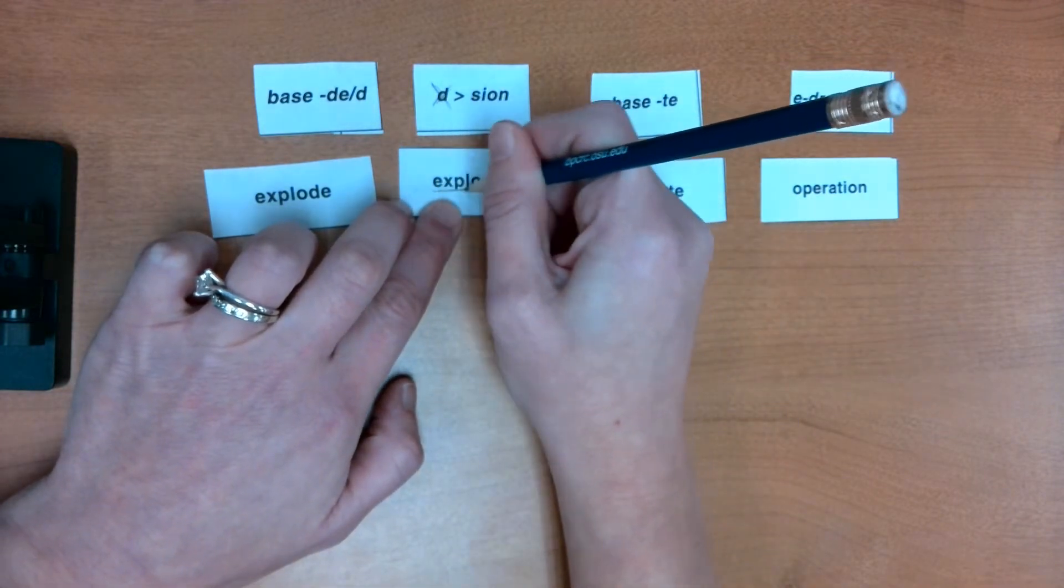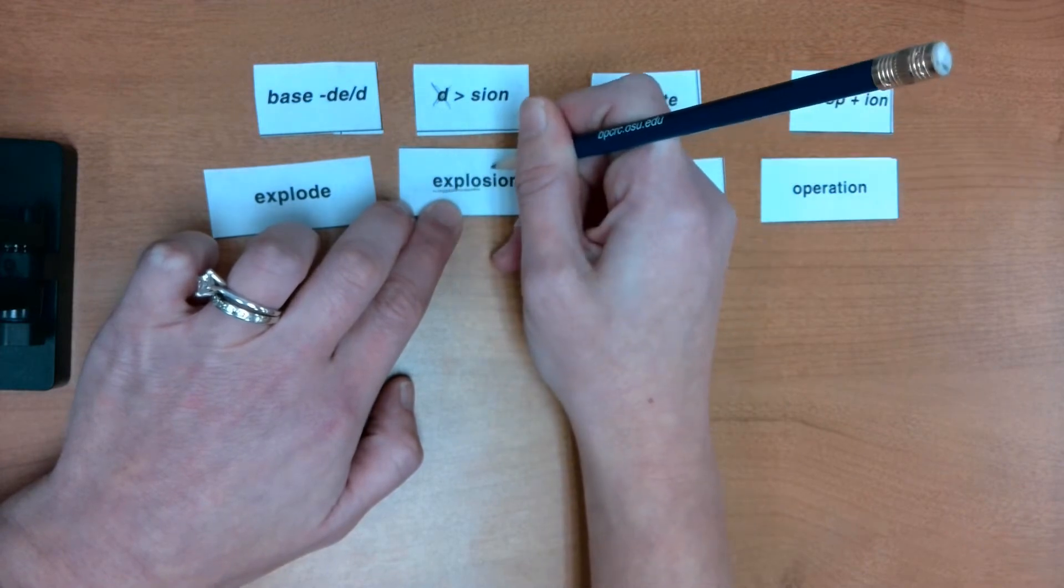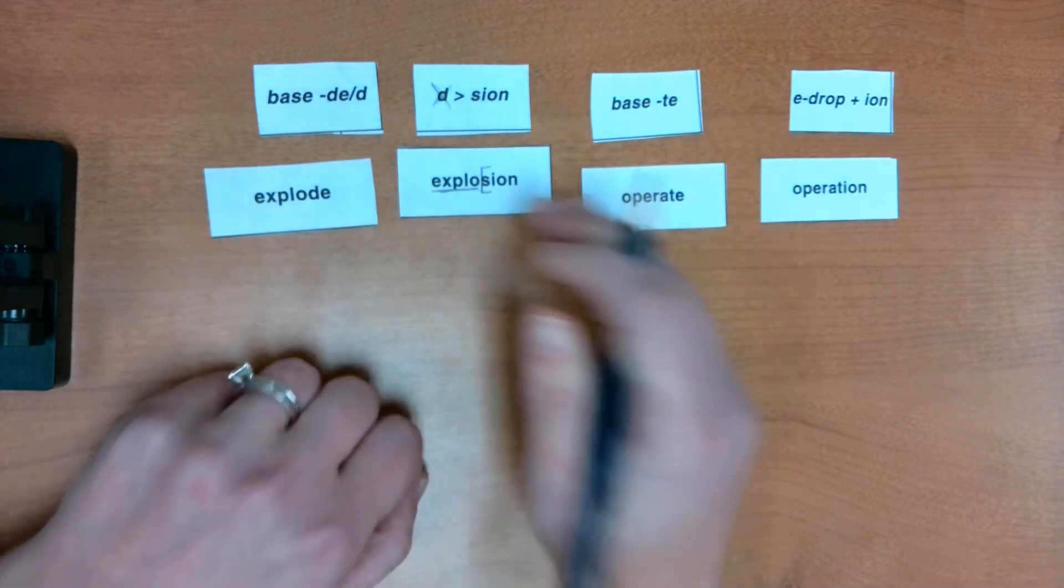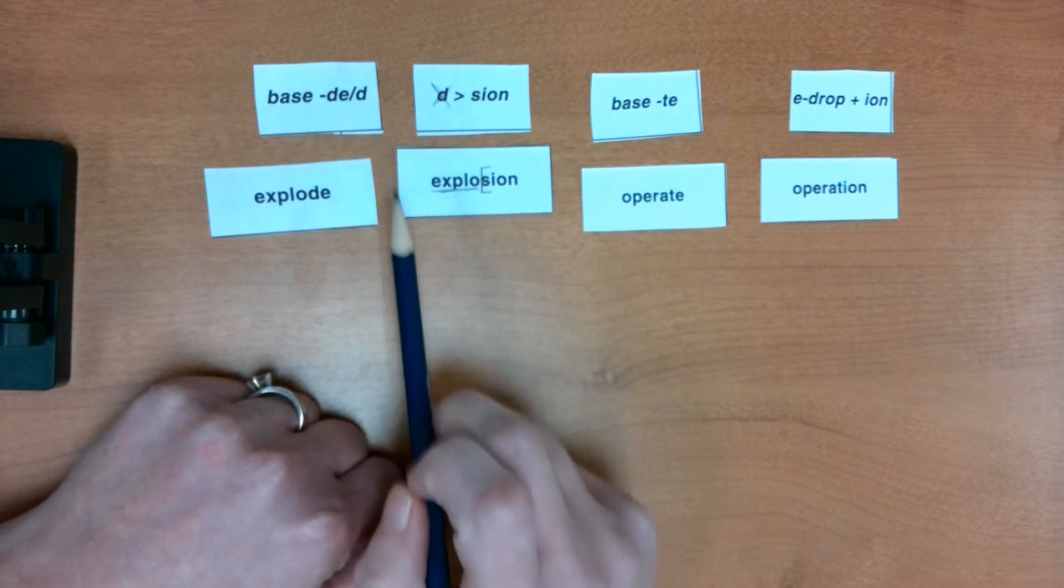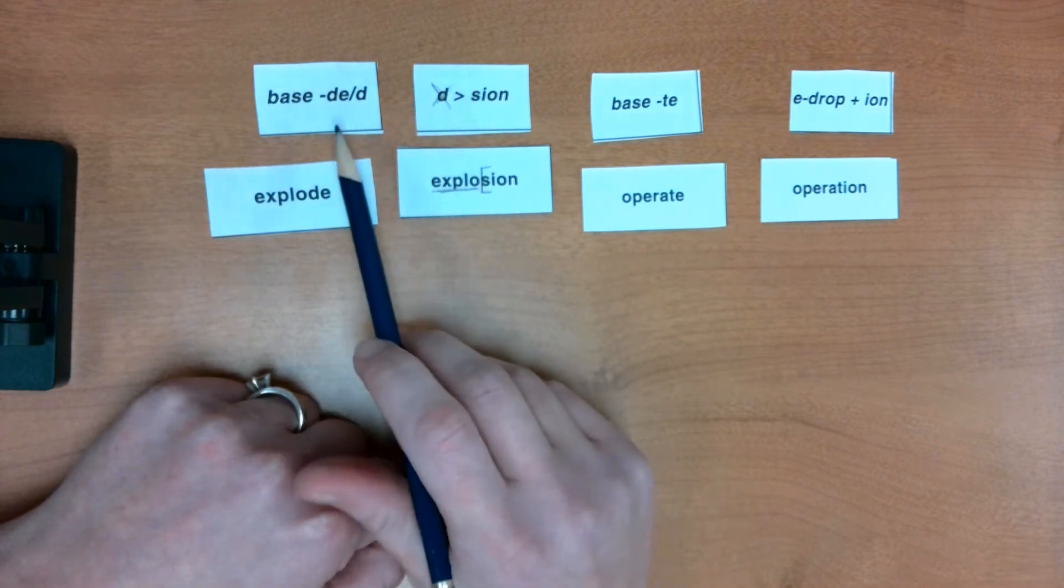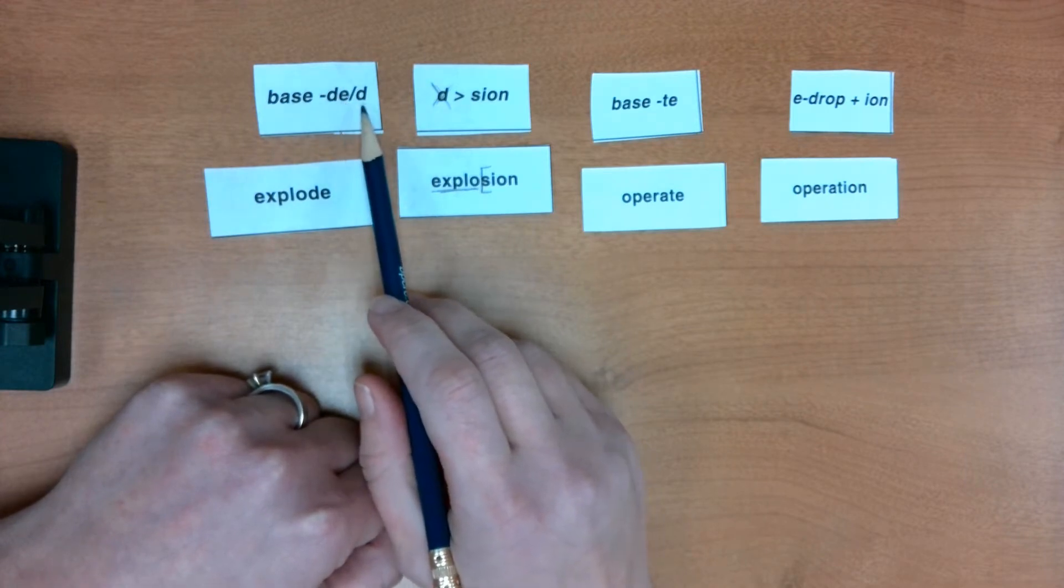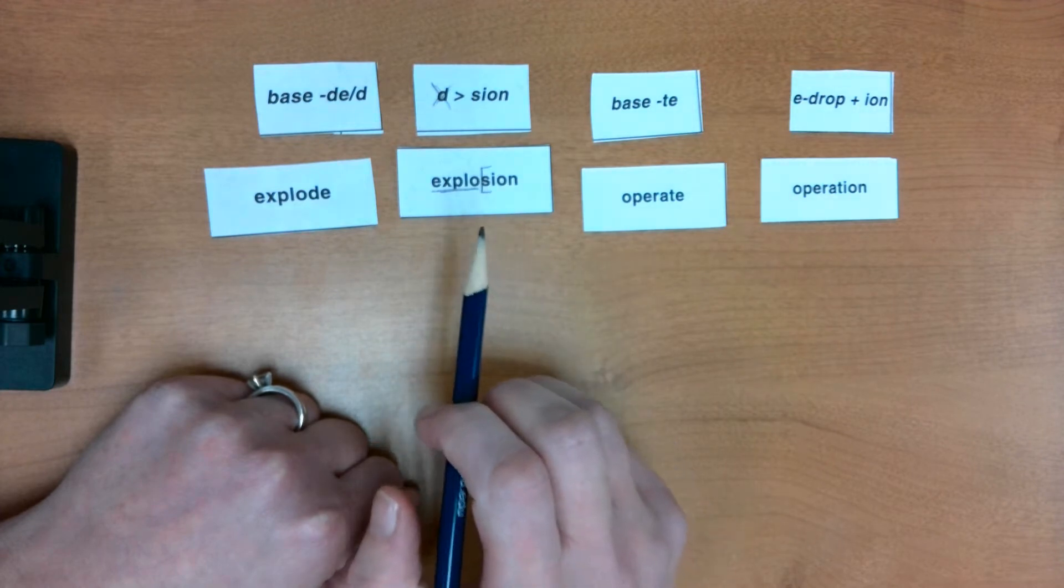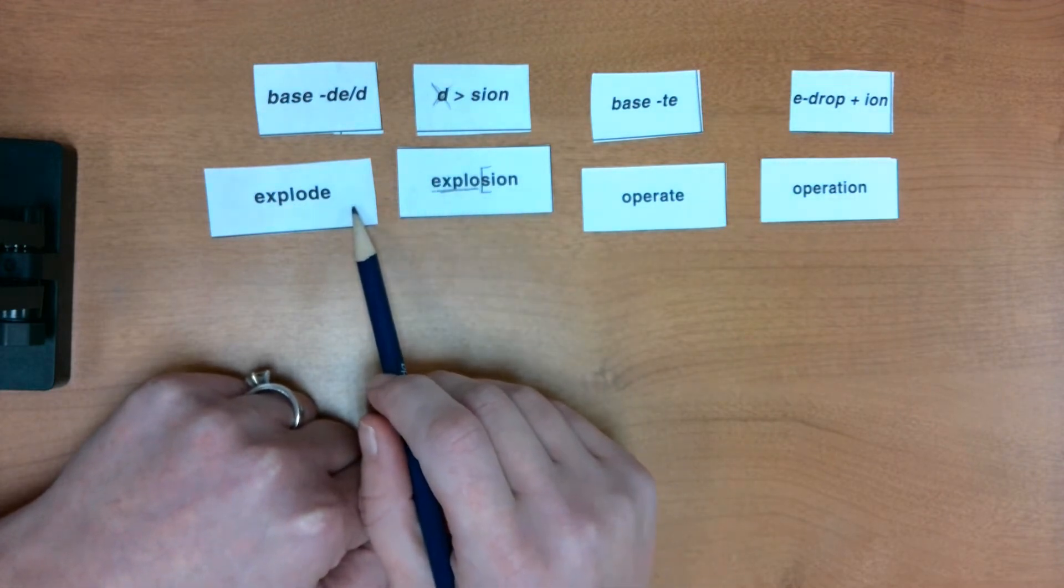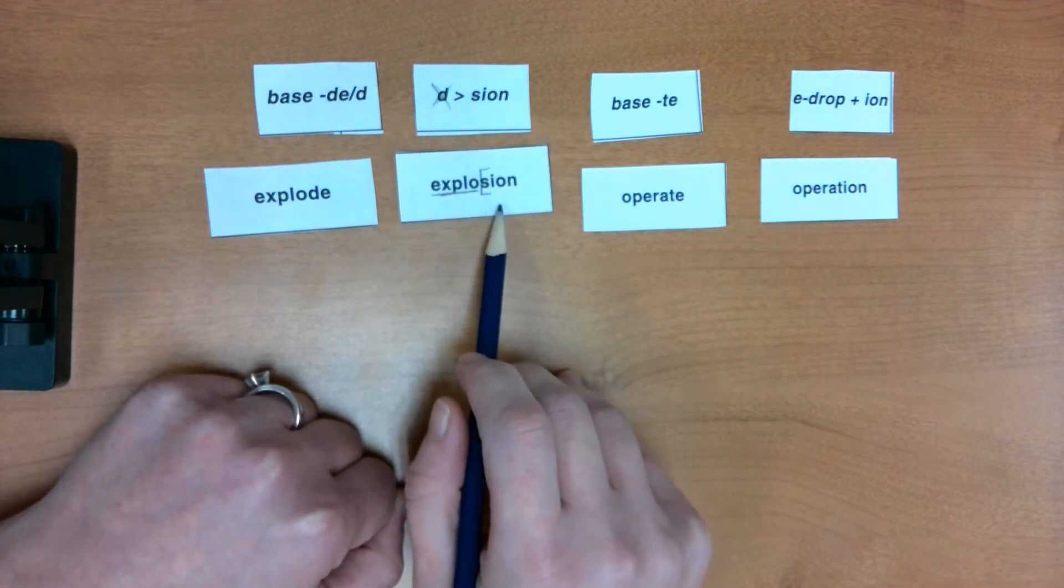So I can take a look right here, and if I chop off that S-I-O-N, I can see that there's a spelling change. That D was dropped. In fact, that D-E was dropped. So the base word ends with a D-E or a D, we change it to S-I-O-N in order to make it a noun suffix. So explode, the state of exploding, explosion.